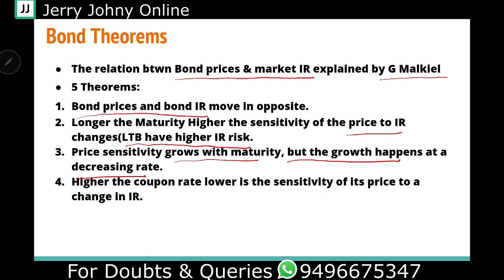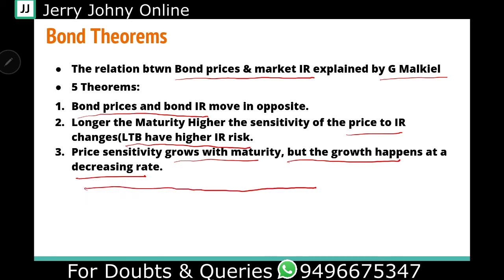The fourth theorem: higher the coupon rate, lower is the sensitivity of the price to interest rate changes. For example, take a 100 rupee face value bond with a 10% coupon, and another bond with a 13% coupon. The bond offering a 13% coupon return will have lower price sensitivity to interest rate changes compared to the 10% coupon bond.